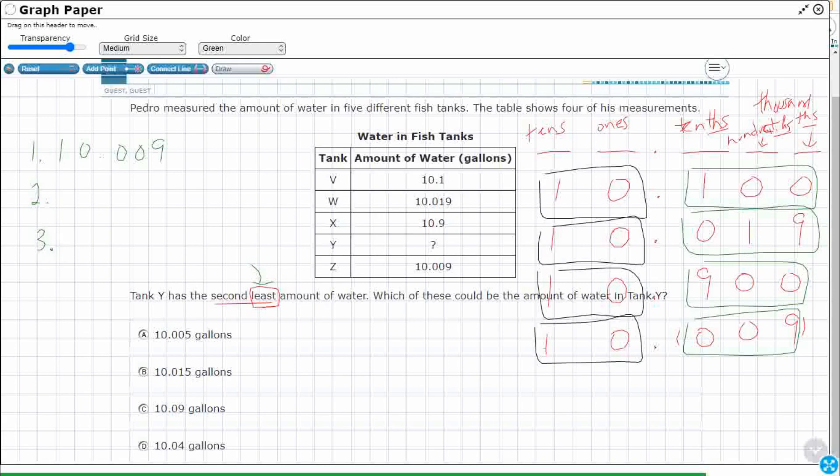Then, what's my next smallest is 19. Ten point zero one nine, or ten and nineteen thousandths. If it matters, right? The fourth one would be ten and one-tenth. And then, I've got my ten and nine-tenths, or ten and nine hundred thousandths.